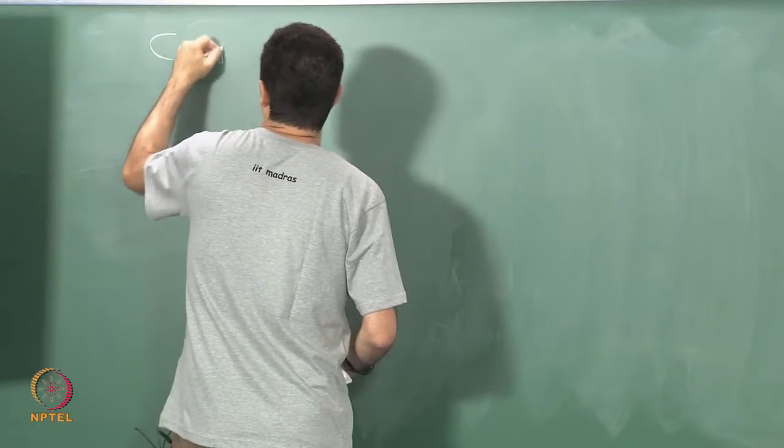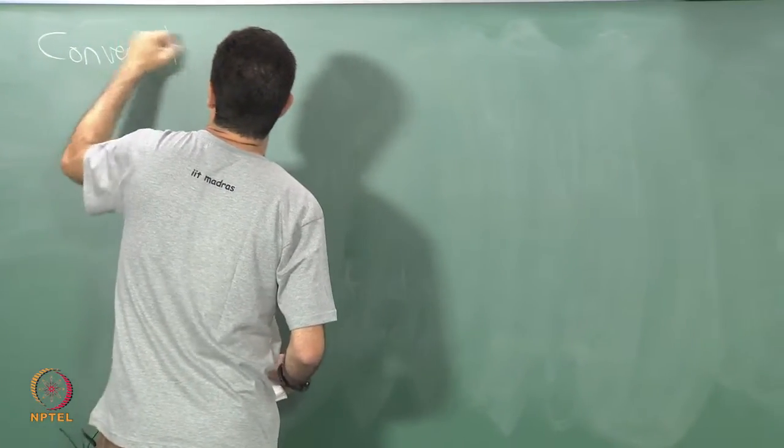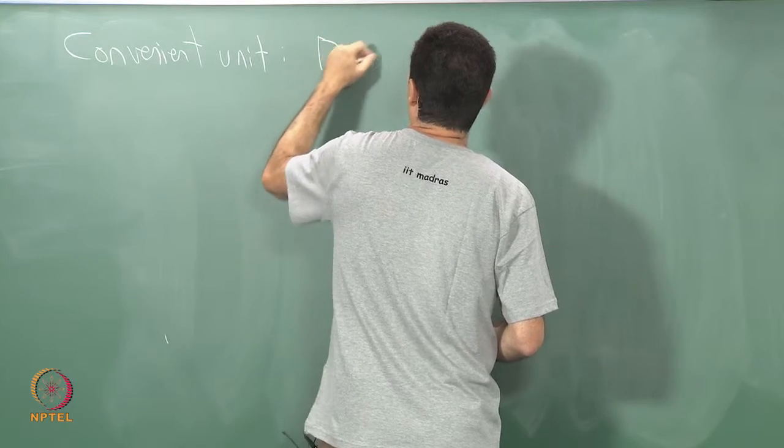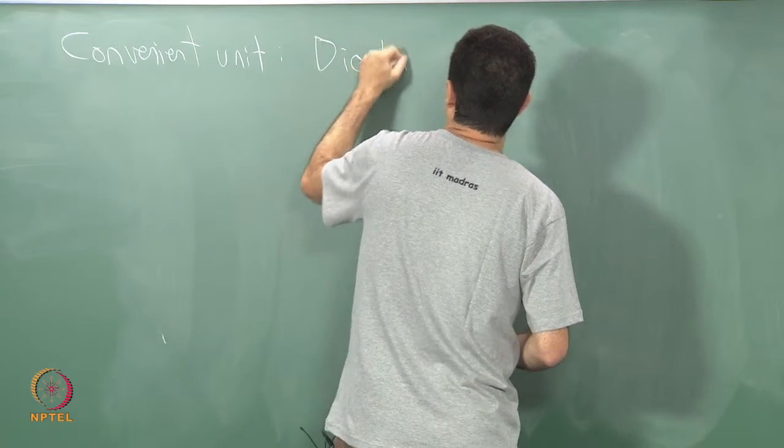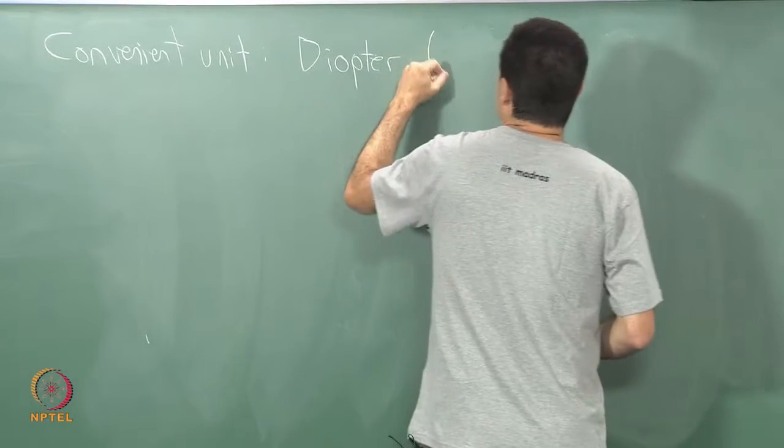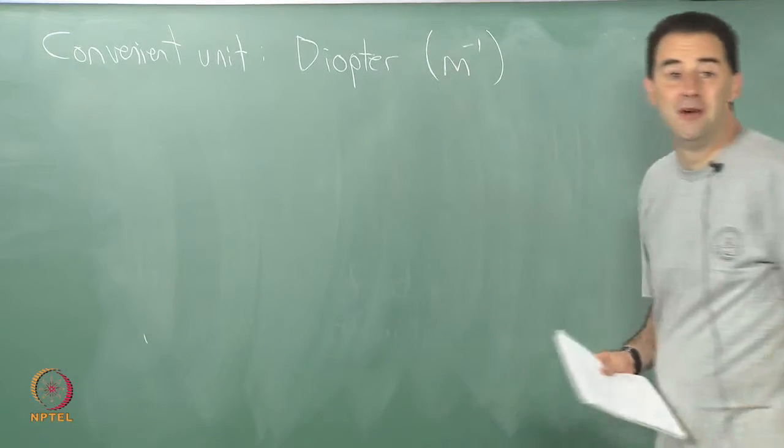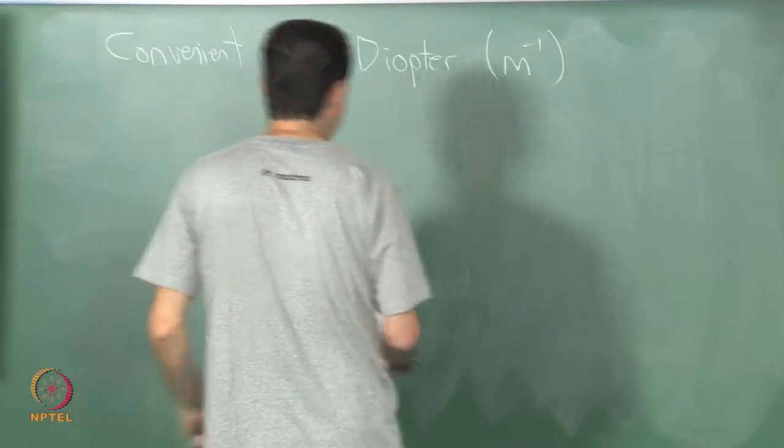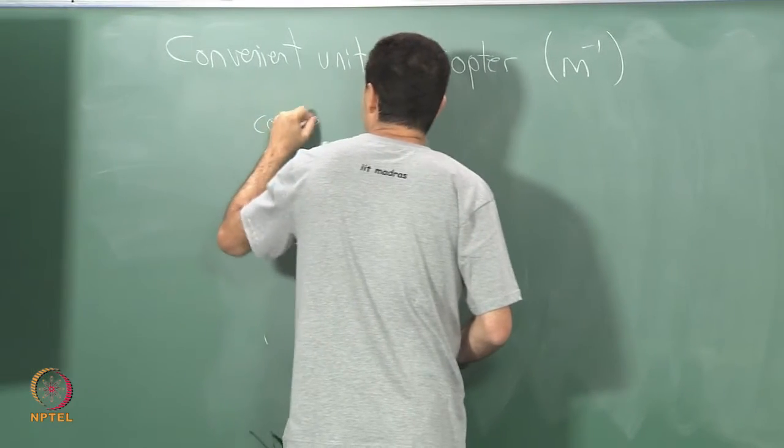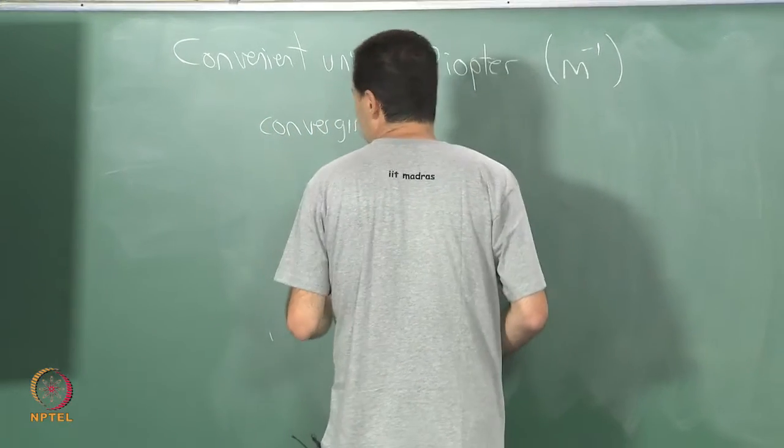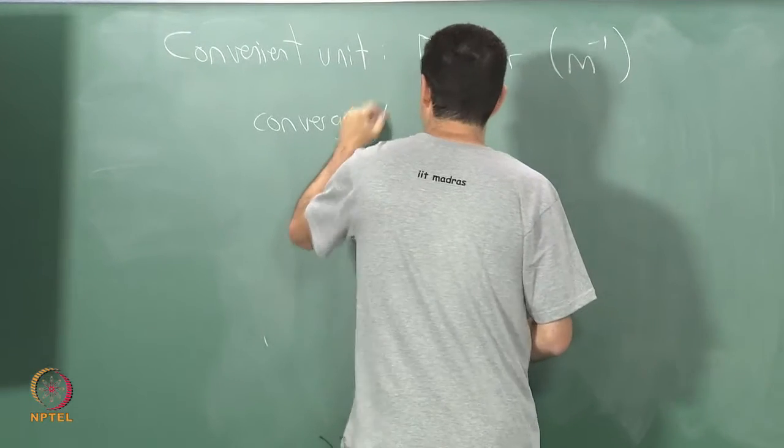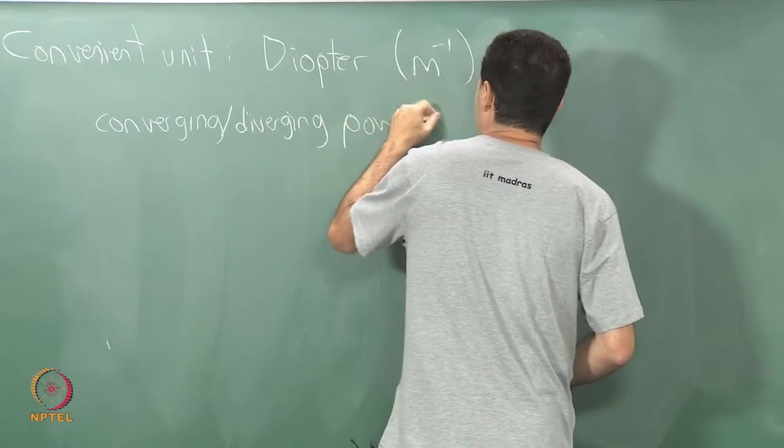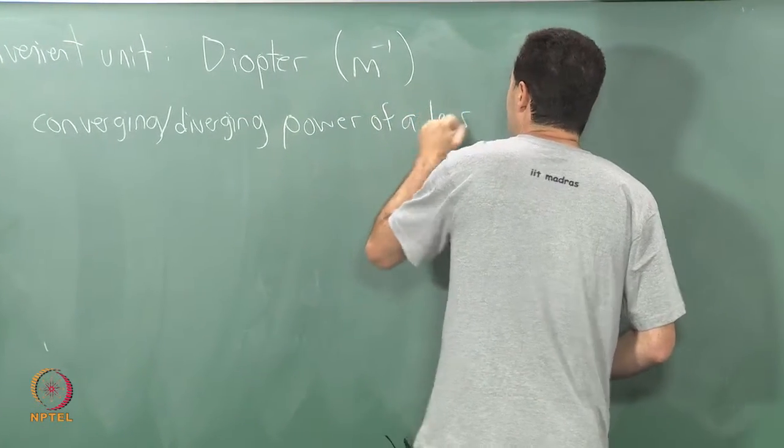This is a convenient unit which is called the diopter which units are 1 over m. So, 1 over meters is the unit of diopters and what it tells you is the converging, it can also express diverging power of a lens.